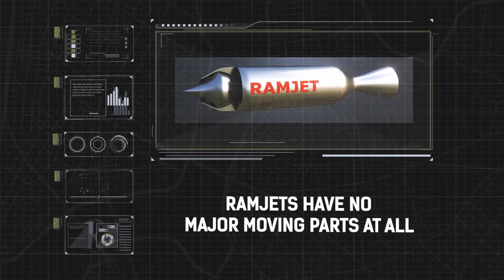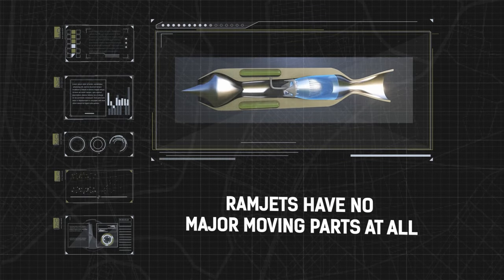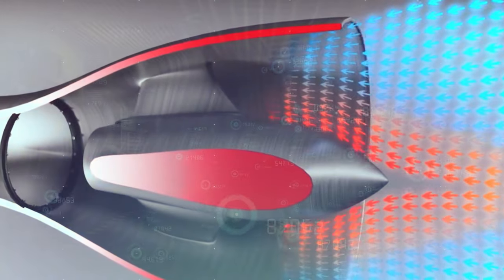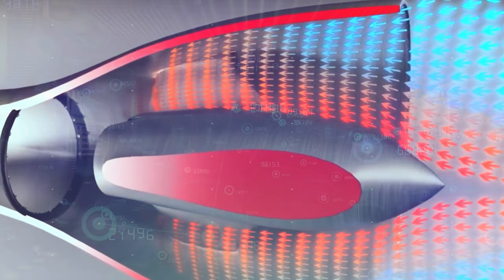Ramjet: A ramjet, on the other hand, has no fan or compressor. They have no major moving parts at all and can only function when already traveling at high speed. They rely on the immense pressure of air flowing into the inlet and around the cone for compression. That compressed air is then mixed with fuel and ignited to produce thrust.